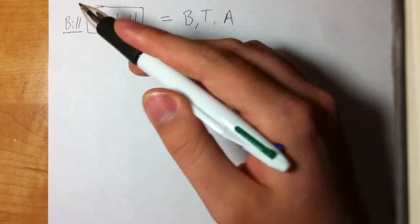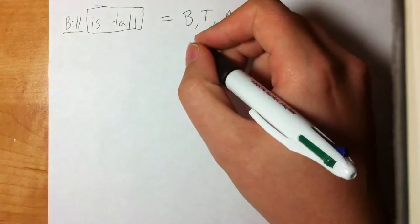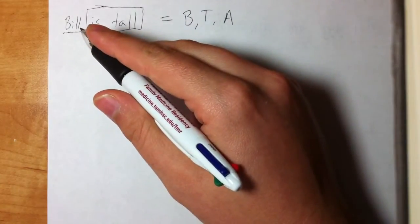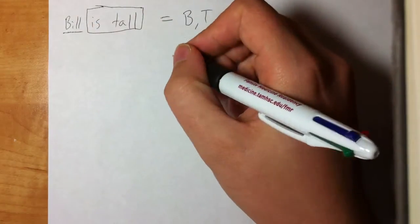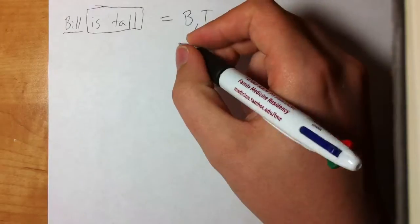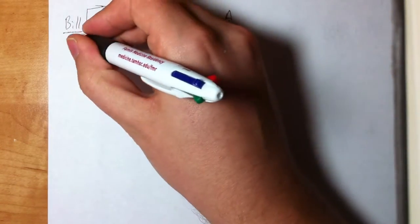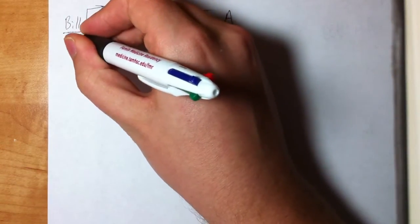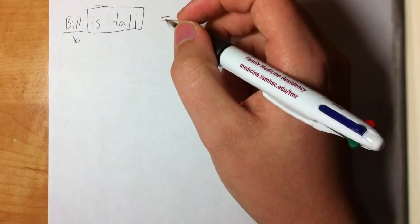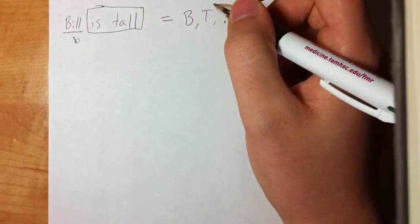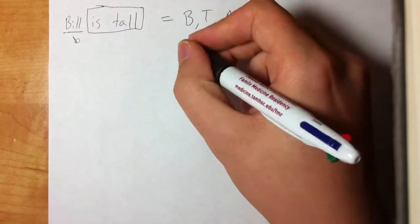The most common individual constants you'll see are just names. The way we symbolize individual constants is with lowercase letters. So 'Bill' is an individual constant — it's a name — and we're going to symbolize that with maybe a little 'b'. That's what an individual constant is: we use lowercase letters.